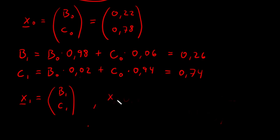Then we can write x1 as a matrix consisting of the numbers that we multiplied these populations with. And that is 0.98. I am just picking out the numbers from this calculation above. 0.06, 0.02 and 0.94. And then calculating and then putting in the numbers B0 and C0.